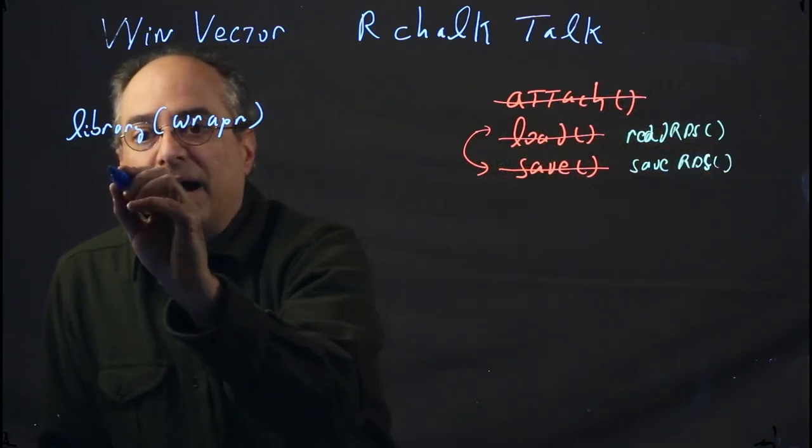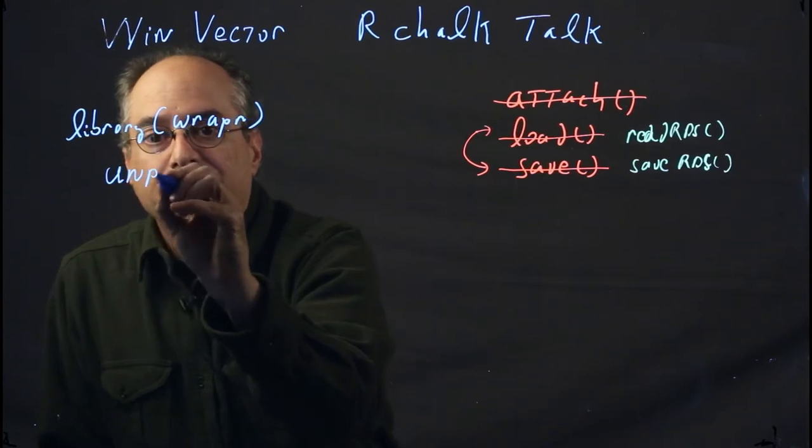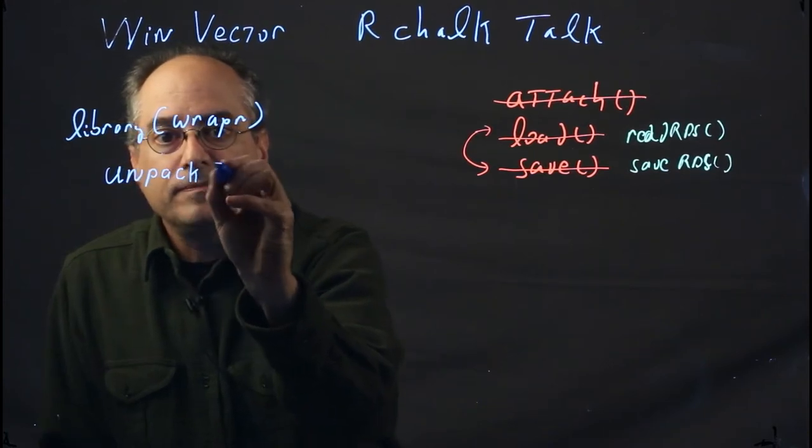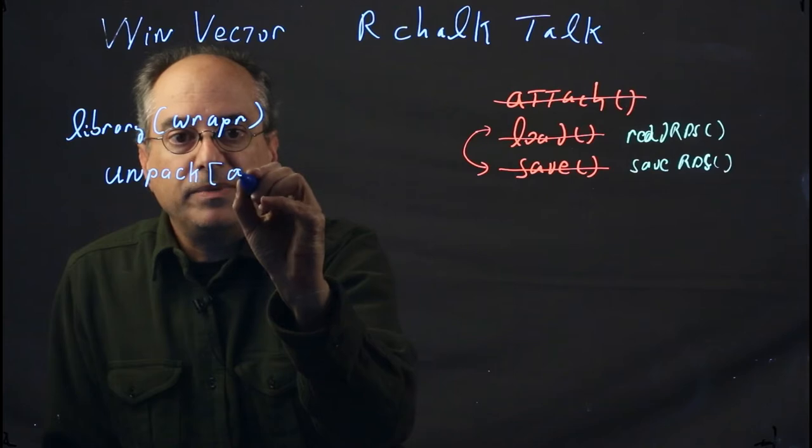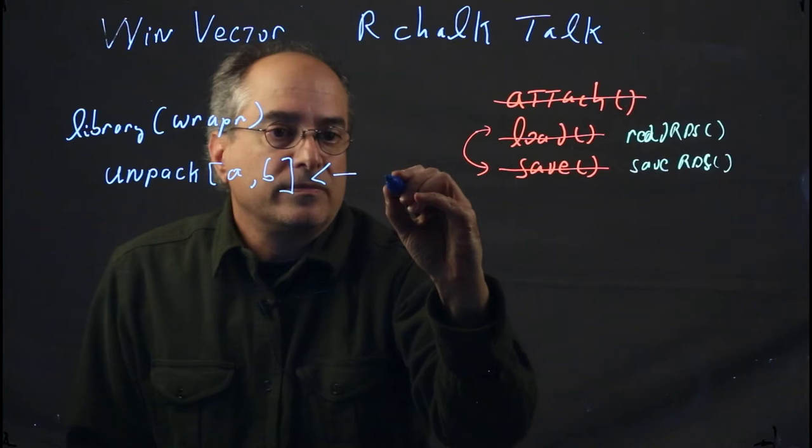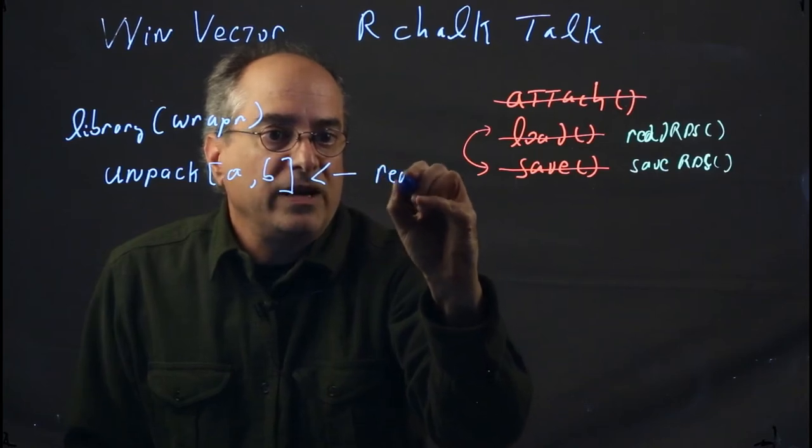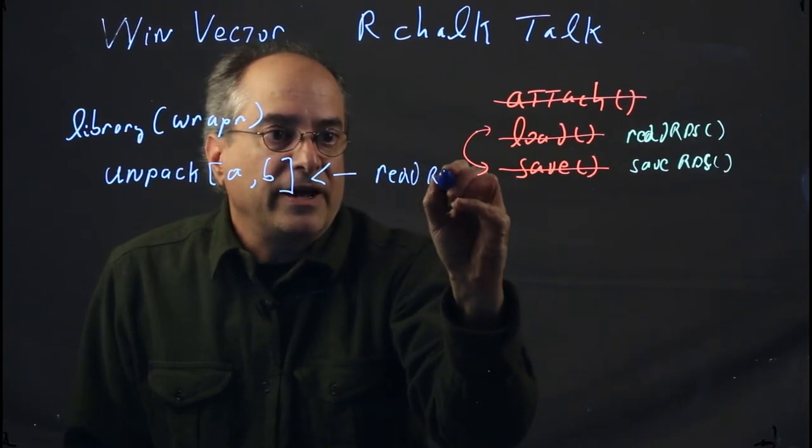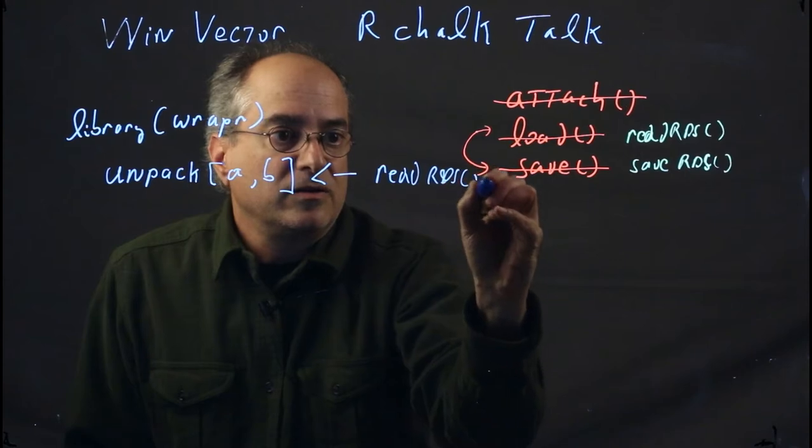The way we would read a set of objects from a named list that have been stored is we would say unpack[a, b] <- read.rds(filename).